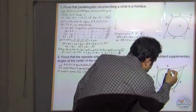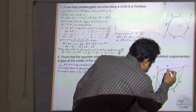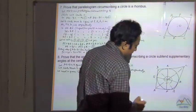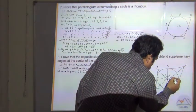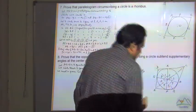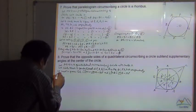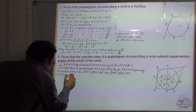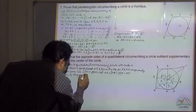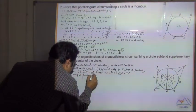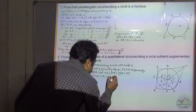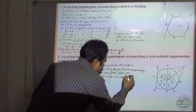Now let us join the tangent touching points with the center O, and mark all the angles as 1, 2, 3, 4, 5, 6, 7, and 8.